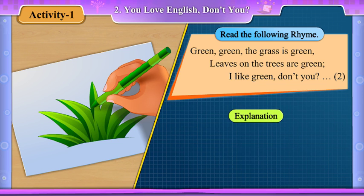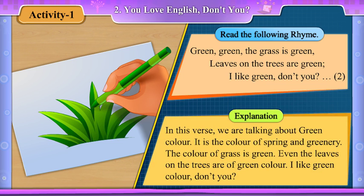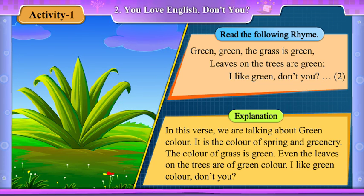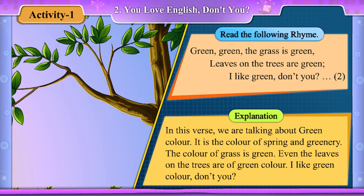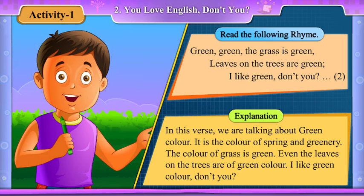Explanation. In this verse, we are talking about green colour. It is the colour of spring and greenery. The colour of grass is green, and even the leaves on the trees are of green colour. I like green colour, don't you?